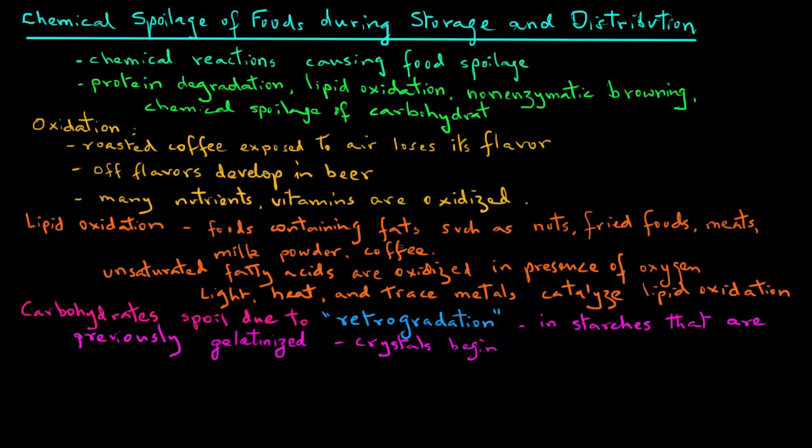Retrogradation is more common with amylose, since they are smaller, unbranched molecules. A common example of this spoilage is staling of bread and bakery products.